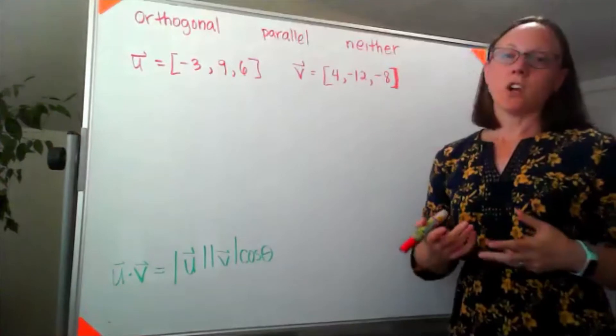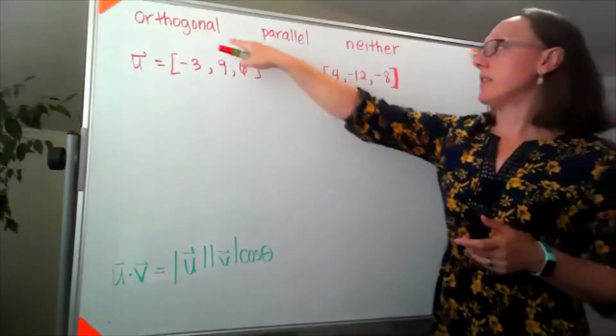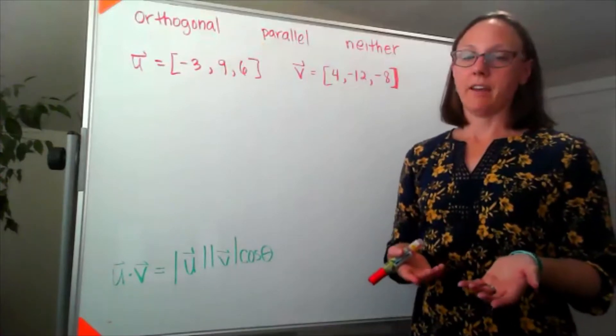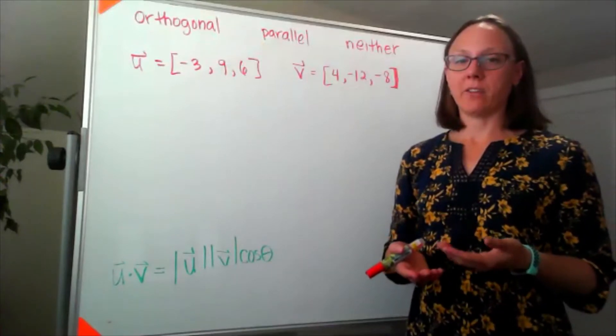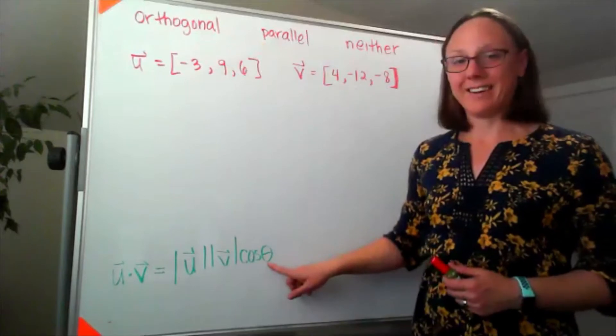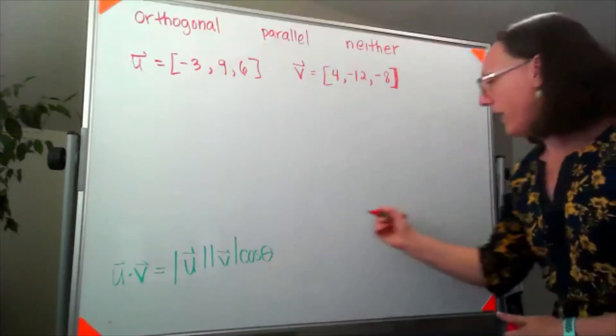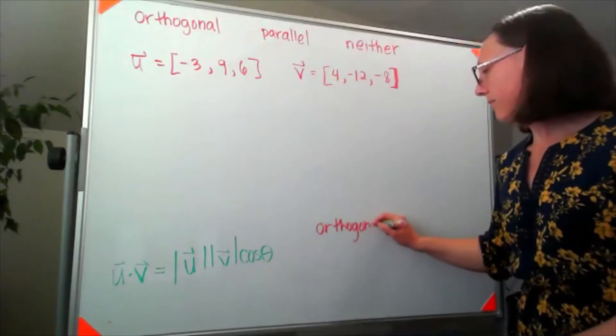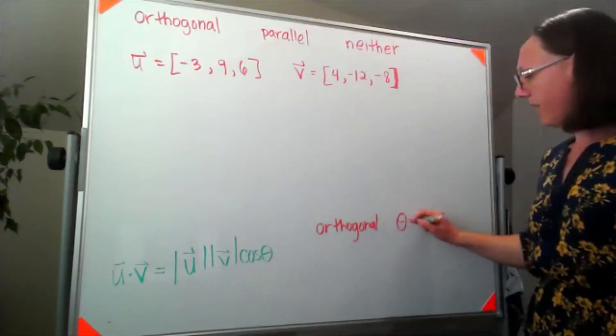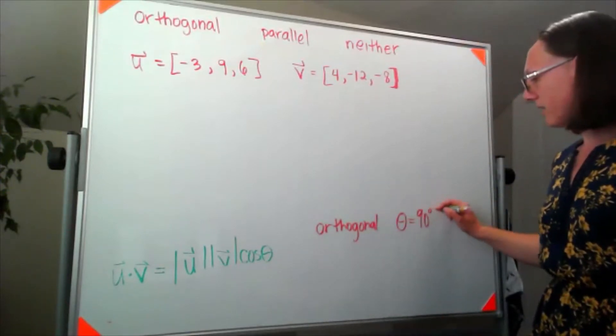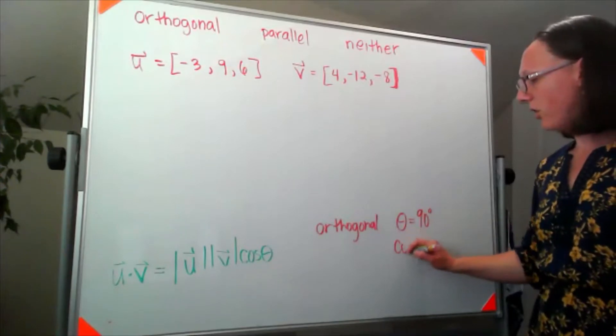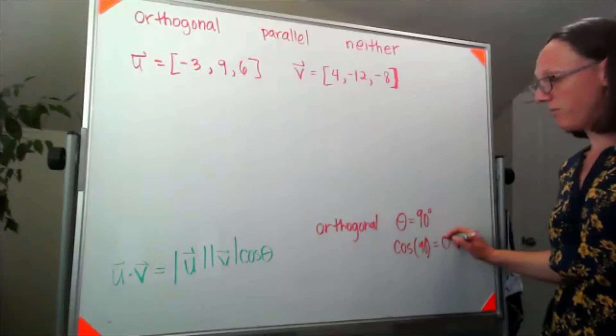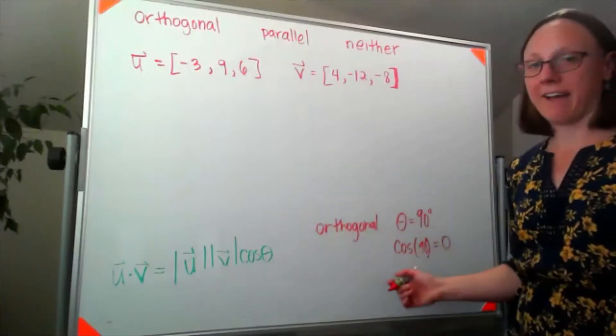Well let's start by talking about the orthogonal piece. Orthogonal means perpendicular to, and if I have two vectors that are perpendicular then the angle between them is 90 degrees. So if they're orthogonal then that angle is going to be 90 degrees which means cosine of 90 degrees is equal to 0, which means the dot product would have to be 0.